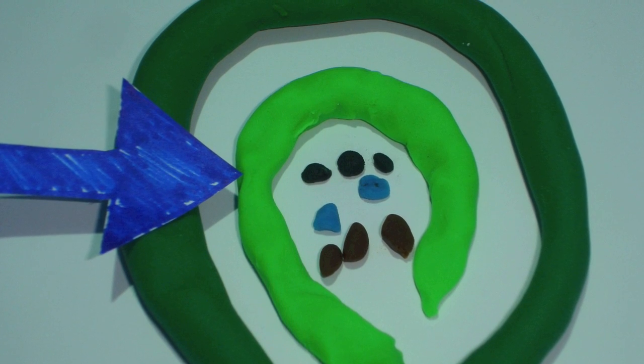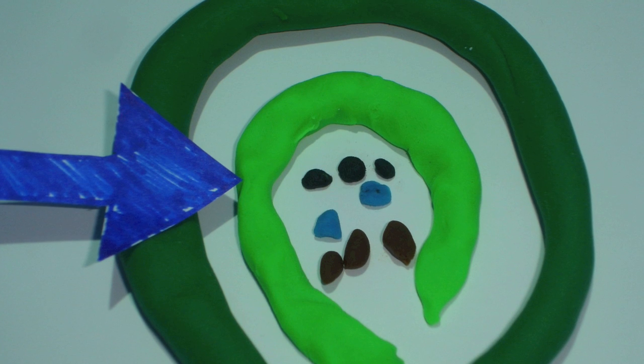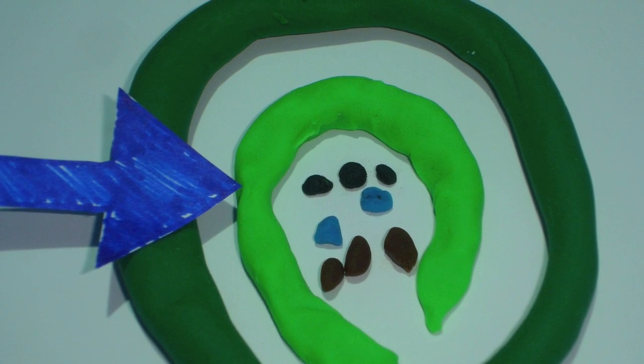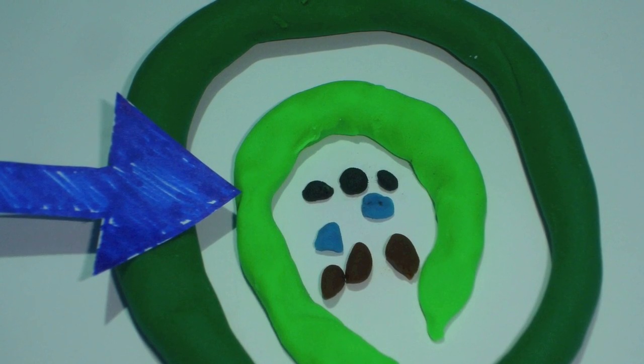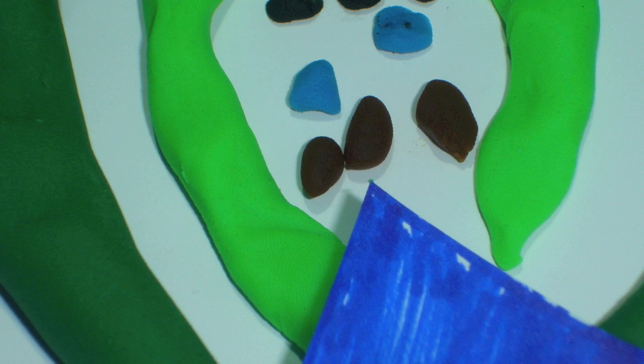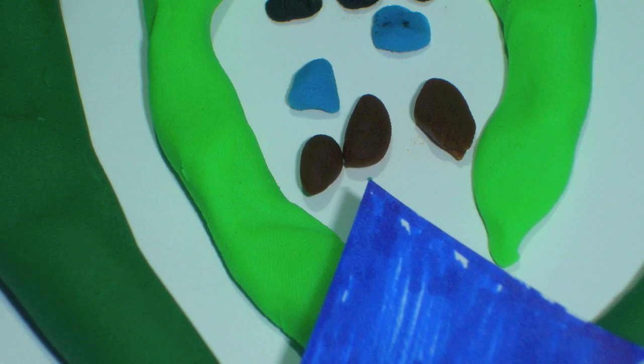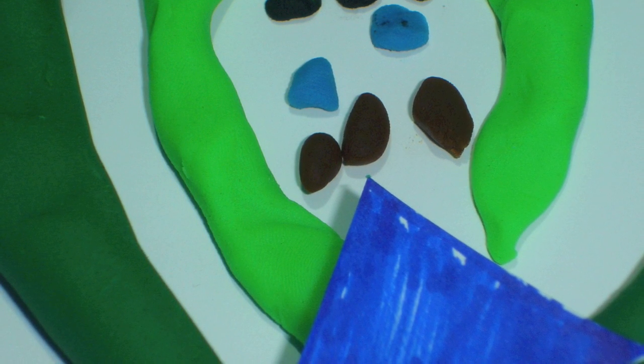This is the ovule. It becomes the seed after fertilization. This is the egg. After fertilization, it will be morphed into the embryo.